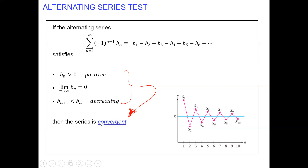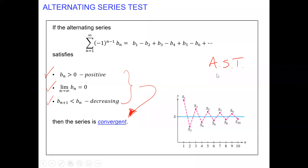Important note: this test only tests convergence. If something is not right — if we cannot verify the three conditions — then we're not using AST. AST can only conclude convergence. Please never say an infinite series is divergent by AST — that does not exist.